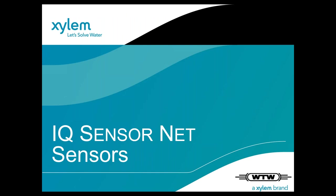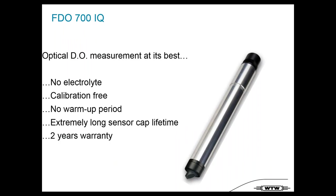That was a short overview of the IQ SensorNet system. Now a short overview of a few sensor topics. The first is the FDO 700 IQ — optical DO measurement. Key features: no electrolyte needed, completely calibration-free, and no warm-up period. Many sensors require one to two hours after installation, but with our technology you drop it in the tank and it works immediately.